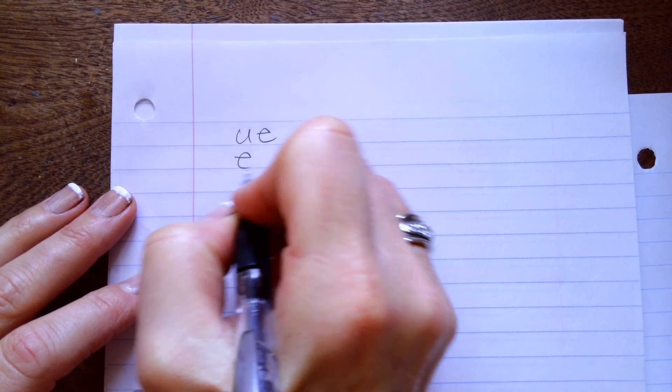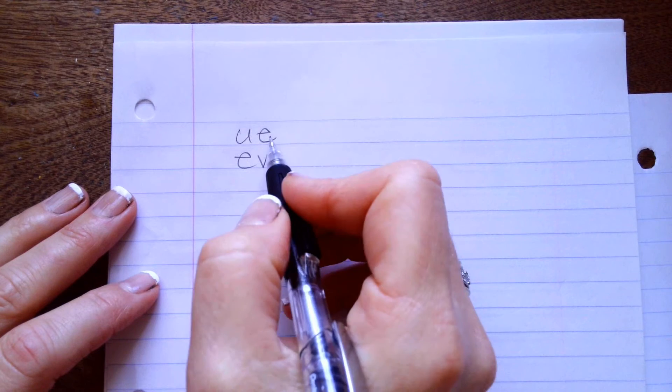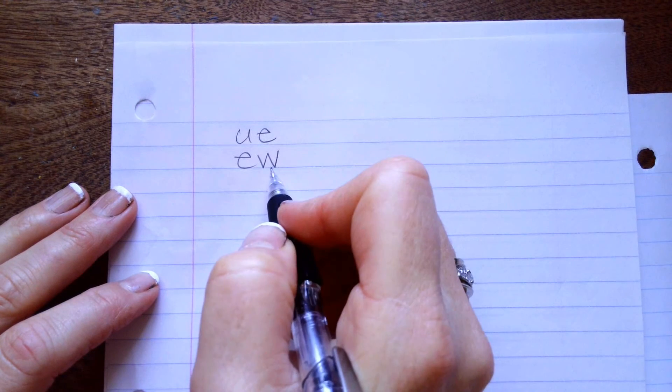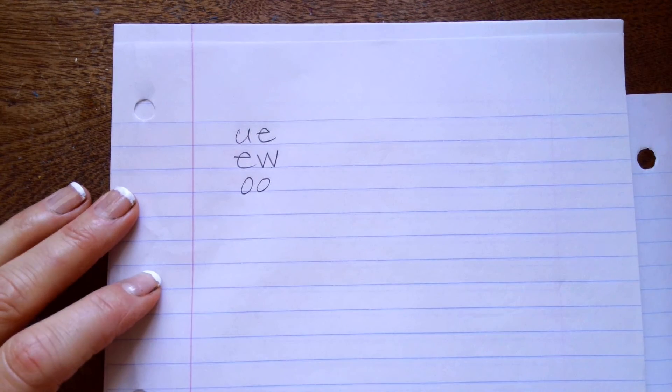Our next sounds mom can give you these pages are U-E makes OO and E-W makes OO and O-O makes OO.